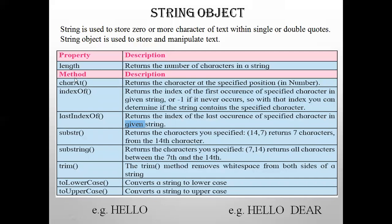Let's see some more methods of the string object. The first method is `charAt()` — written as c-h-a-r-A-t, note that both A and t... the 'A' is capital and 'O' is capital in 'charAt'. When programming these must be written exactly as specified because they are built-in. `charAt()` returns the character at the specified position given as a number in the parenthesis.